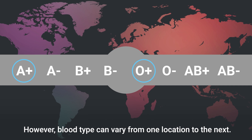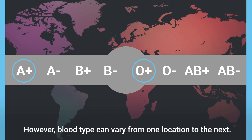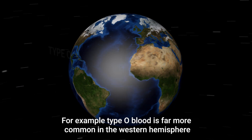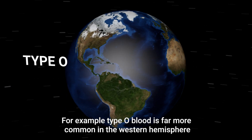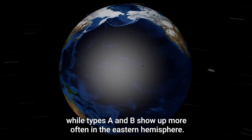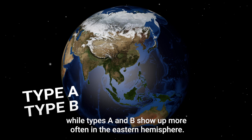However, blood type can vary from one location to the next. For example, type O blood is far more common in the Western Hemisphere, while types A and B show up more often in the Eastern Hemisphere.